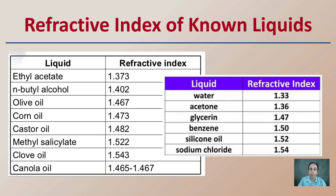Here are some examples of the refractive index of known liquids. If you have a piece of glass and want to determine its refractive index, these are some common liquids that can be used for Beck line determination.